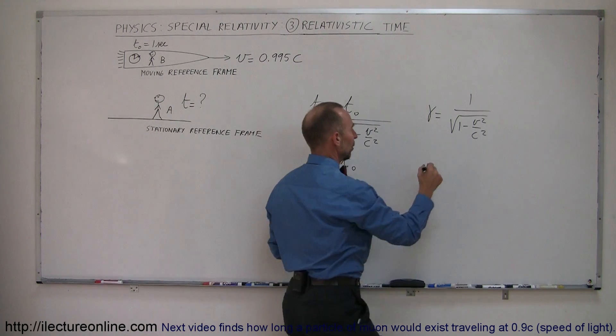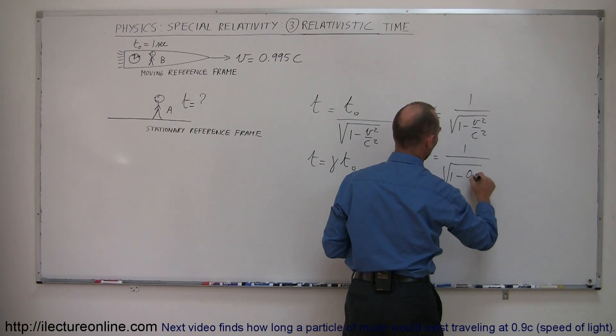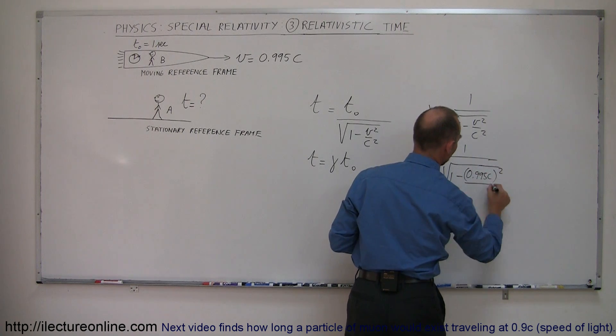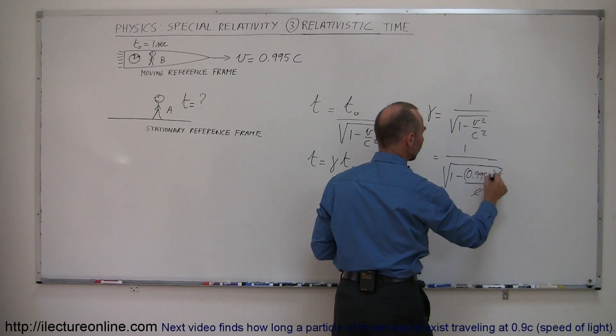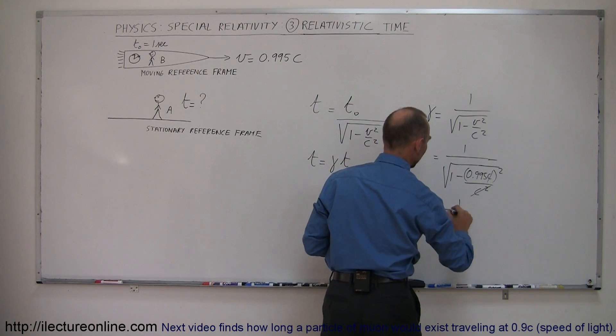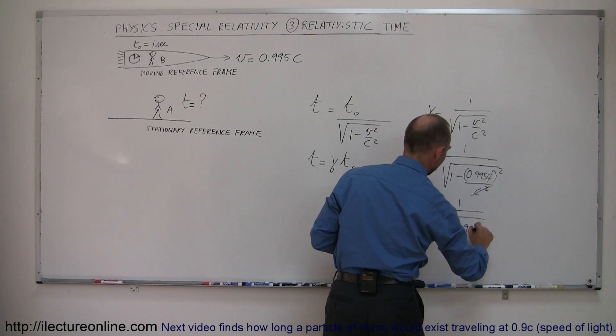Plugging in those numbers, we get gamma equals 1 over the square root of 1 minus (0.995C)² divided by C². You can see that C² cancels out with C², so we end up with 1 over the square root of 1 minus 0.995².